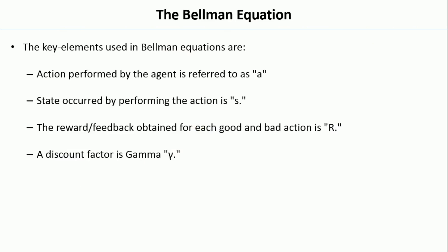The key elements used in Bellman equations are: the action performed by the agent is referred to as A, the state occurred by performing the action is referred to as S, the reward or feedback obtained for each good or bad action is R, and there is a discount factor denoted by gamma.